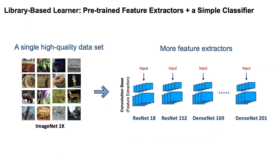The library-based learner has two components: the first is pre-trained feature extractors, and the second is a simple classifier. We find that a single high-quality dataset is actually all that is needed for few-shot learning.